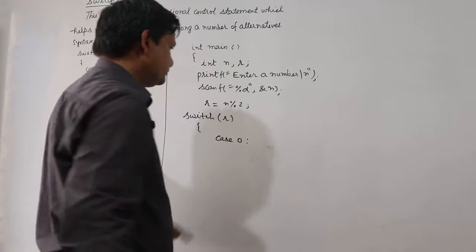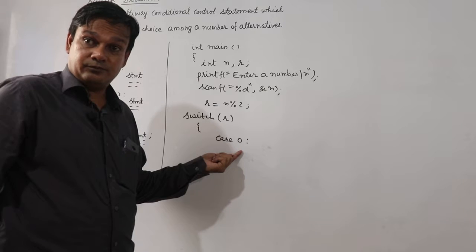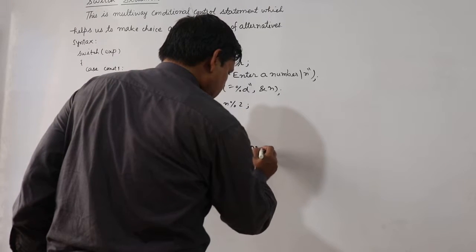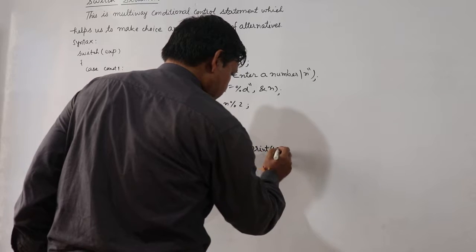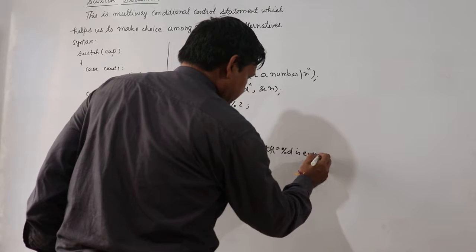if r is 0 then what will be there, printf percent d is even,